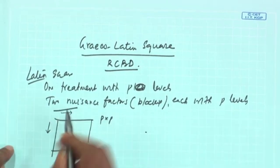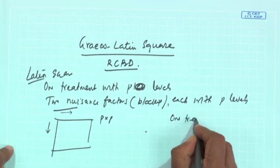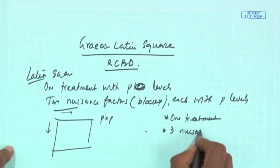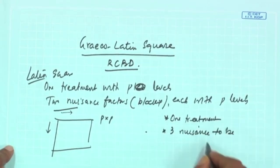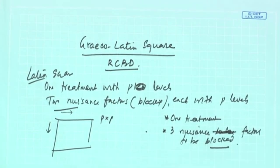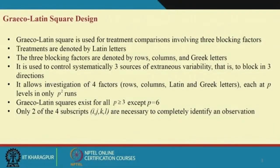Now, suppose you want to block another factor — you have one treatment and three nuisance factors to be blocked. That will be done through the Graeco-Latin Square design. Graeco-Latin Square is used for treatment comparisons involving three blocking factors; treatments are denoted by Latin letters A, B, C, D, etc.